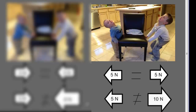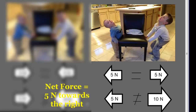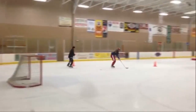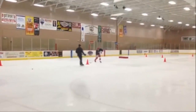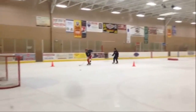In another scenario, the smaller boy could pull with five newtons while the larger boy pulls with ten newtons. These are unbalanced forces. The net force would be five newtons, and the unbalanced forces would cause the object — the chair — to move towards the larger boy, since he is pulling with a greater magnitude of force.